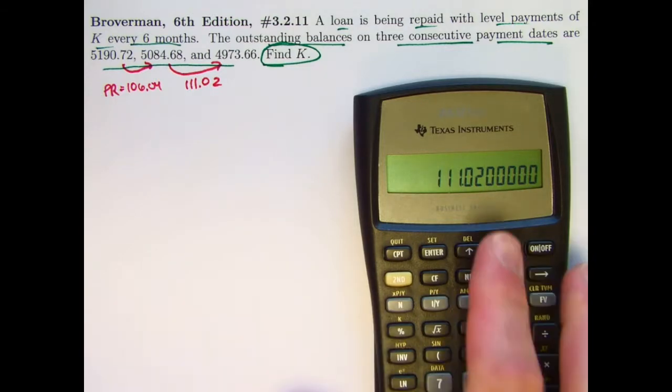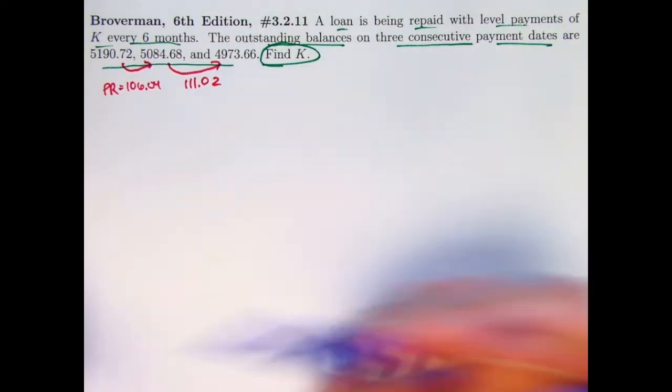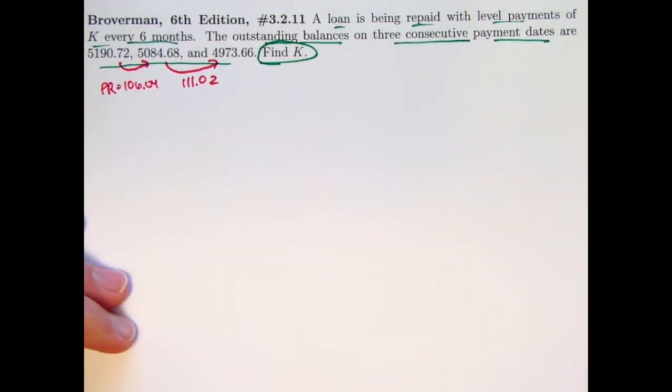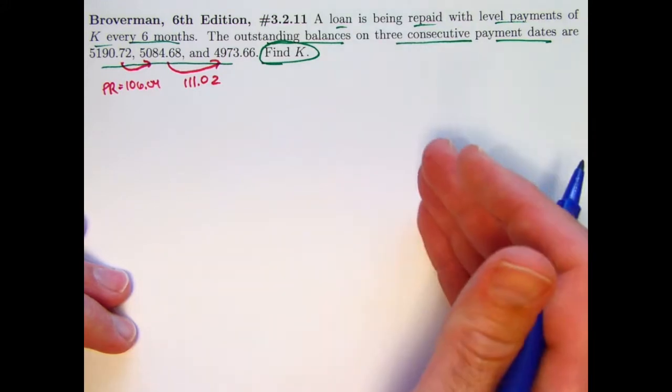Now again, we are going to use a formula here, but we don't need to write it down in its abstract form. The total payment K is constant. It's a level payment, and it's always made up of a principal reduction component and an interest component.